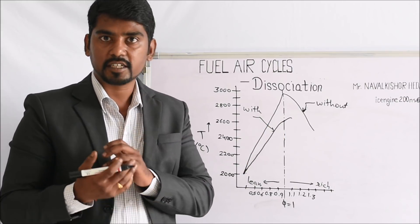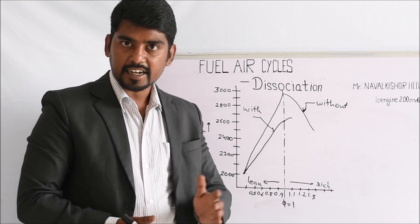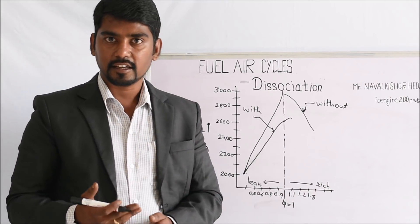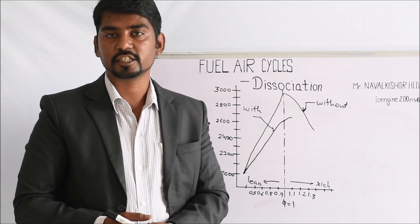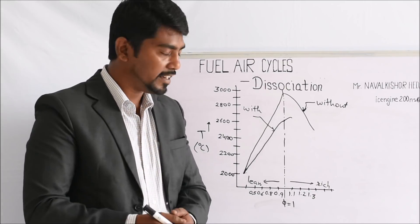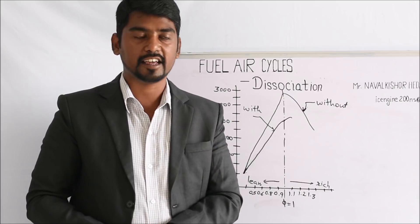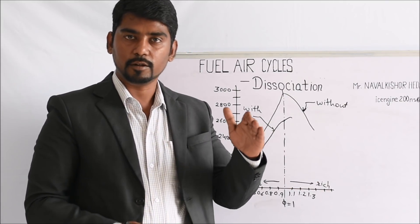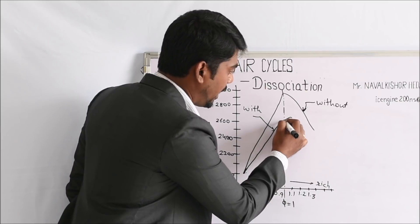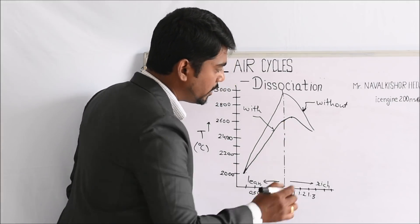Why does the gap stop increasing when the mixture becomes rich? When the mixture is rich and fuel is more compared to air, CO2 forms only after complete combustion. As already discussed, complete combustion does not take place with a rich fuel-air mixture, so CO2 is not present in a higher amount. When CO2 is not in a higher amount, the formation of CO and O2 will be less compared to what we get at the stoichiometric ratio. That is why the gap is less compared to the stoichiometric ratio and then goes on reducing further.